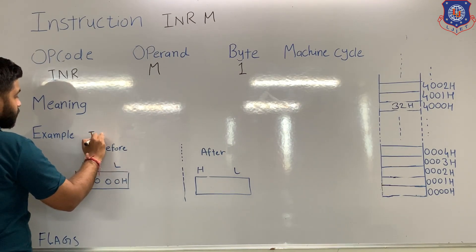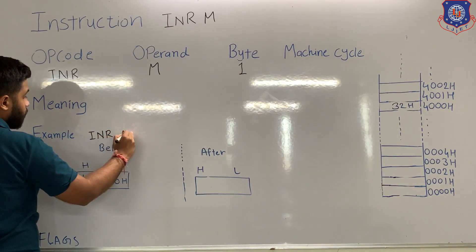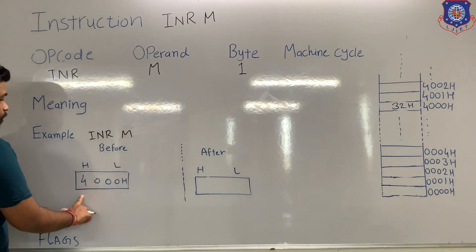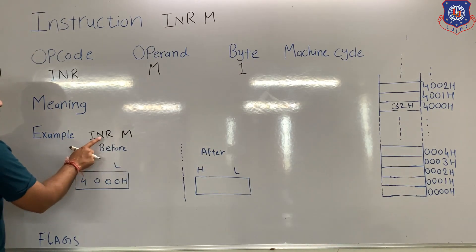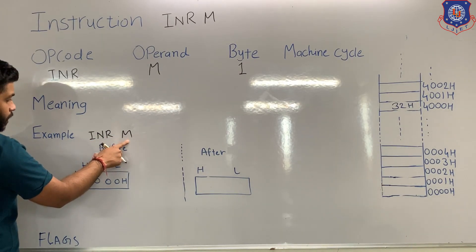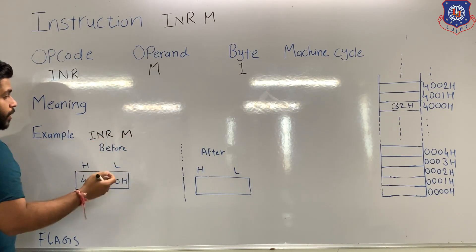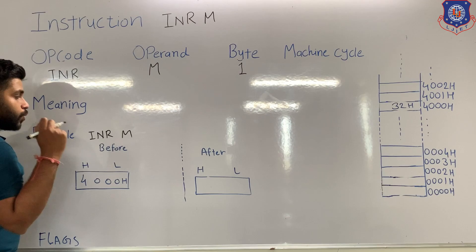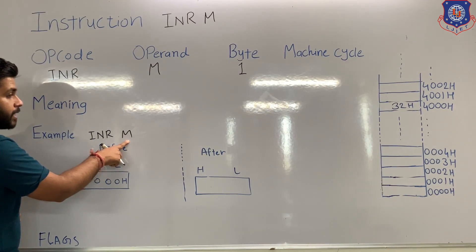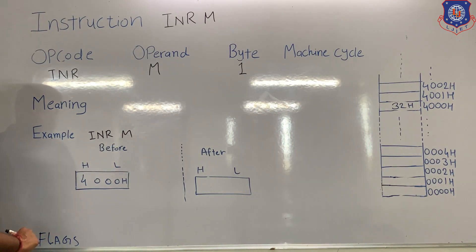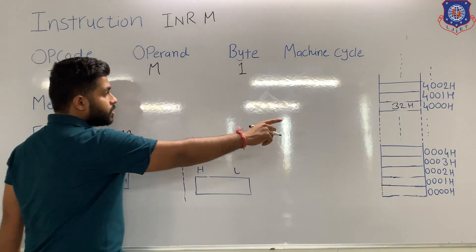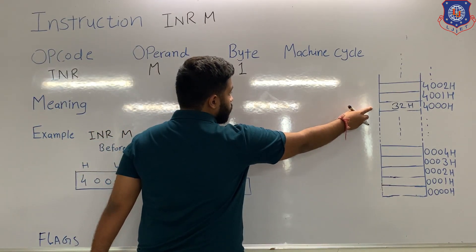Let's see one example of INR M. Before the instruction, the content of the HL pair is 4000H. INR M means increment the content of the memory location by 1 and the result will be stored in the memory location. Whenever M is specified in the instruction, it means the memory location specified in the HL pair. So, in the HL pair, the 4000H memory location is specified, and the data present at 4000H is 32H.